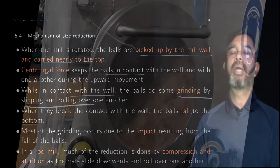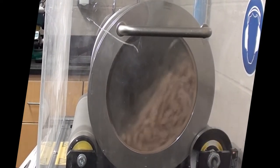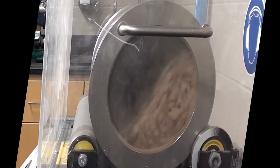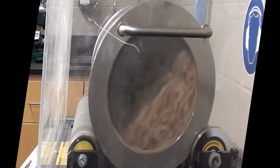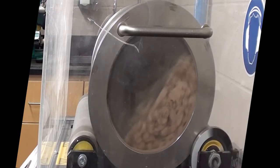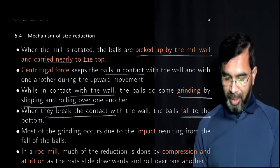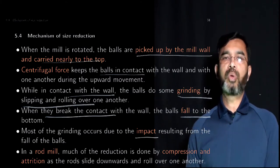In that way, some size reduction takes place. When the particles and the balls break away from the surface, both the particles and the balls fall to the bottom. When the balls fall on the particles, they create an impact force, and that's the main mechanism of size reduction in a ball mill.